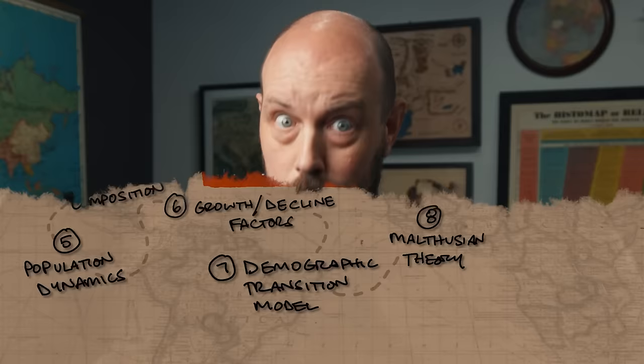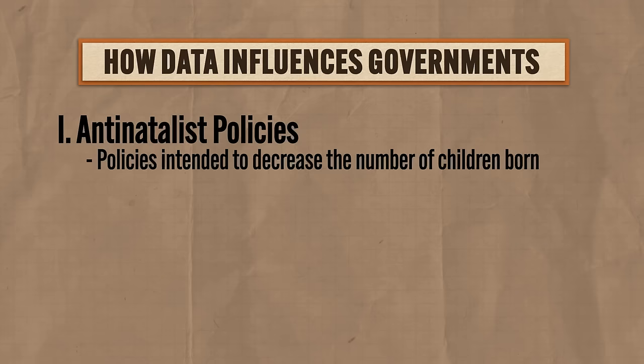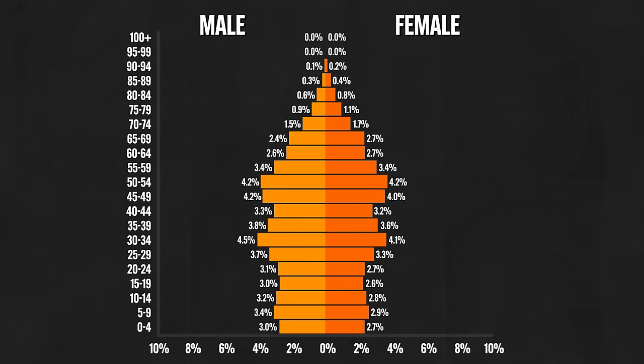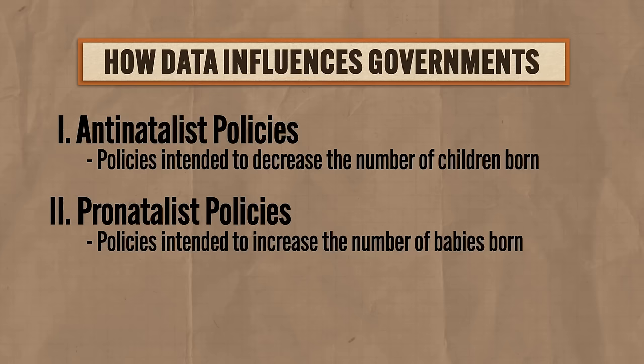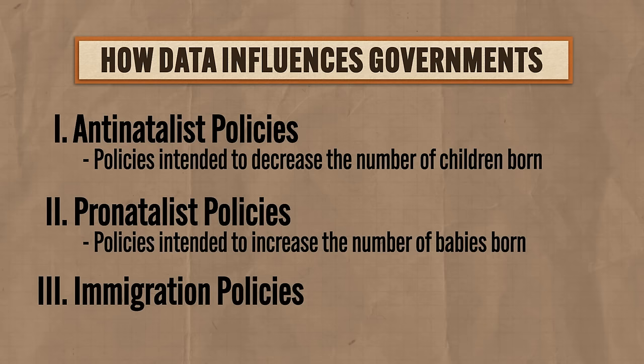Now let's talk about consequences of population growth or decline, and what governments can do about it. Governments can attempt to influence their rate of natural increase in several ways. First, they can introduce antinatalist policies — policies intended to decrease the number of children born — usually because populations are growing too fast for resources to keep up. The most famous example is China's one-child policy. On the other side, governments can introduce pronatalist policies — intended to increase the number of babies born — usually because of concerns about aging populations and gaps in working-age people. These can include generous parental leave, free daycare, and other means of decreasing the expense of raising children. Third, governments can introduce immigration policies that either allow more immigrants in or restrict their flow.